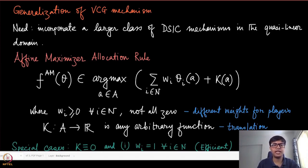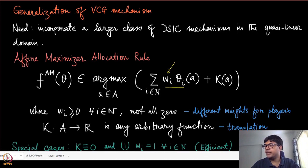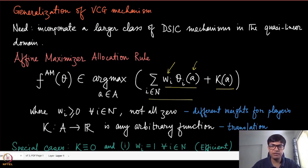We have seen this affine maximizer allocation rule when we gave some examples of allocation rules in a previous module. What is different here is that, unlike the efficient allocation, we now have a weight for every agent i. wi represents a weight corresponding to agent i, and these weights need not always be equal. We take the weighted sum of the valuations of all the agents at a specific allocation, and then translate that weighted sum with a function kappa, which is a function of the allocation, giving different values to different allocations.